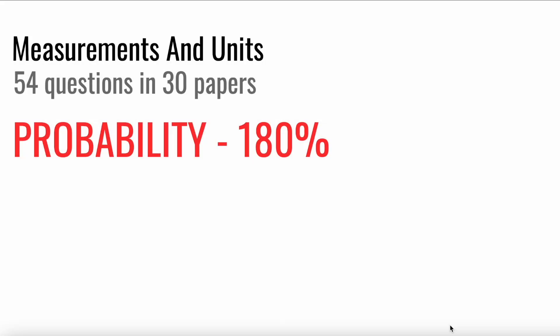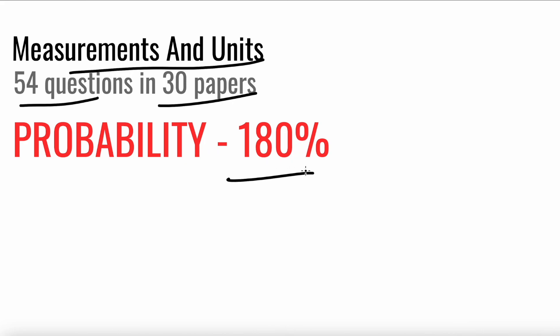Let's start off with Measurements and Units. As you can see, we found 54 questions in 30 papers, which means there's a probability of 180%. What this probability means is that you are likely to get around two questions in your MCQ paper.